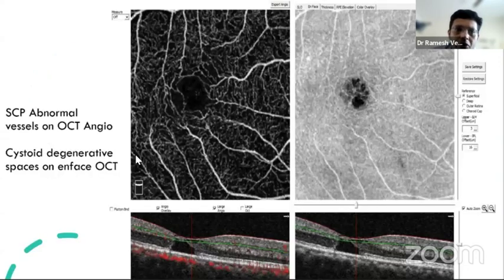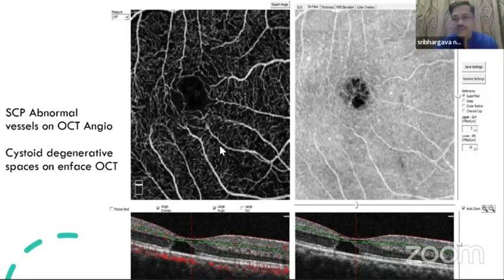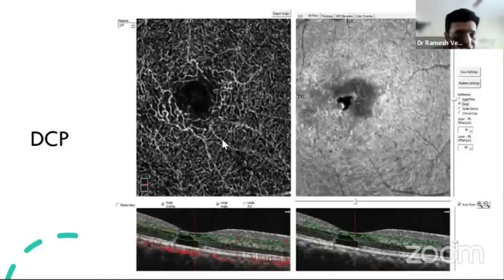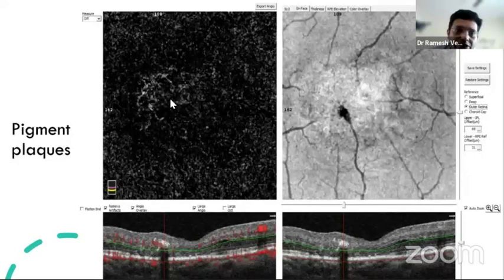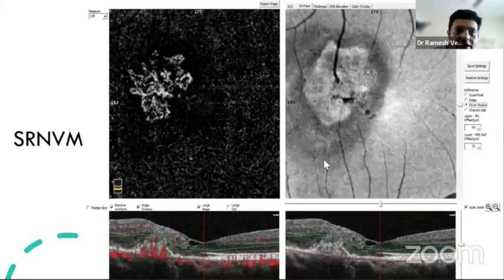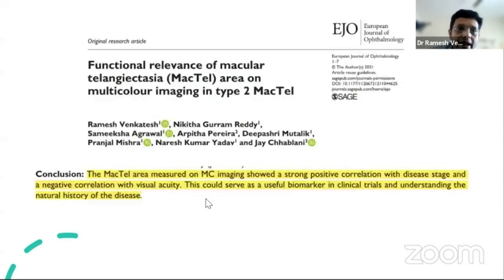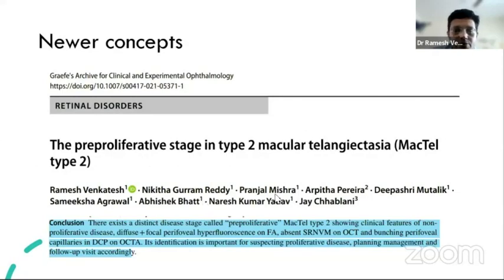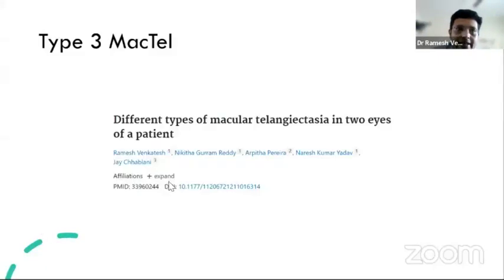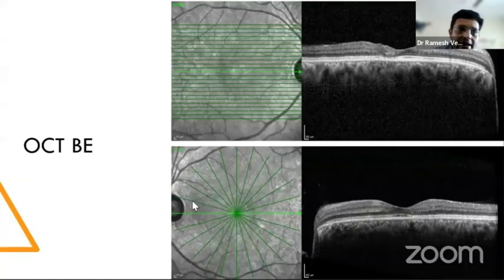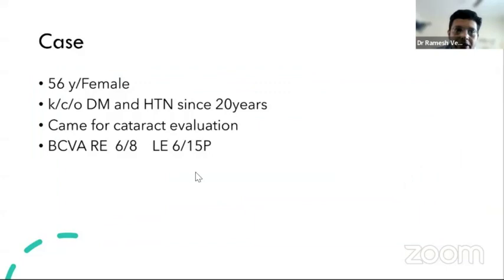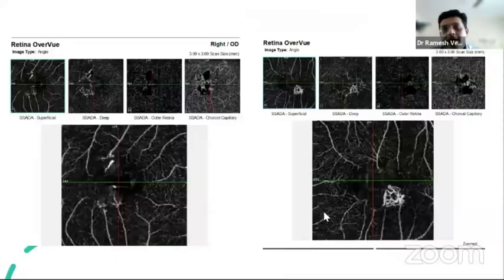OCT angiography is a very important tool in MacTel, enabling diagnosis of all vascular and structural changes. Visual acuity is hardly affected in early stages. Newer concepts include correlation of the MacTel area with visual acuity, description of pre-proliferative stages, and type 3 MacTel now considered a follow-up of type 2 disease. A case of epiretinal neovascularization detectable on OCTA in macular telangiectasia was also presented.